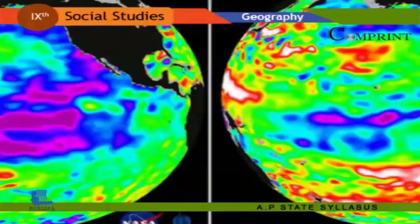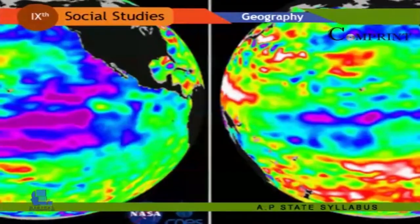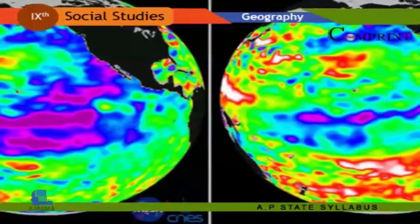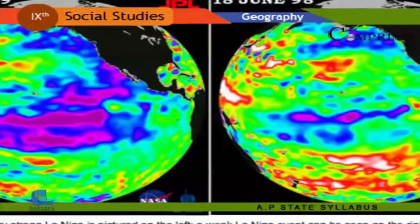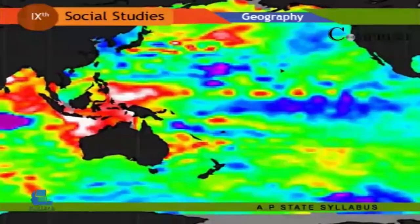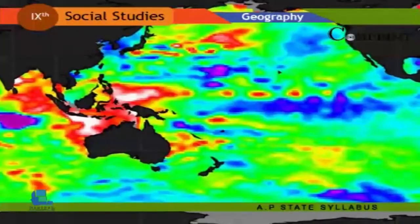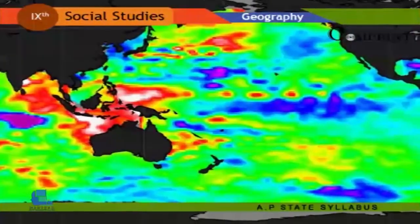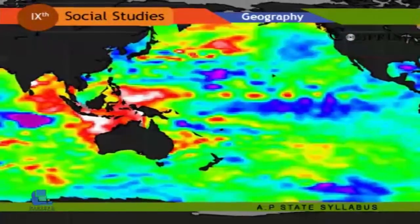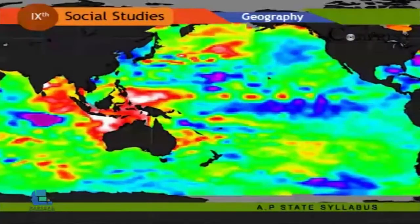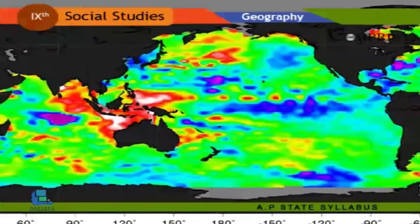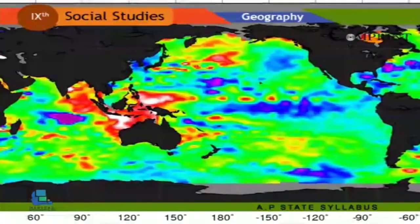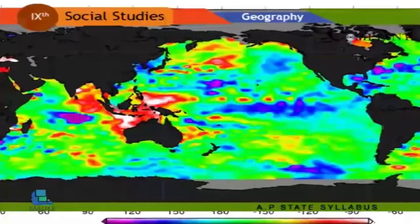Ocean temperature: The activity of the southwest monsoon in India is affected by El Niño and La Niña — effects caused by changes of temperature in the Pacific Ocean. Ocean temperature is influenced by latitudes, wind, ocean currents, unequal distribution of land, and change of seasons. Normally, ocean temperature varies from 2 degrees Celsius to 29 degrees Celsius.